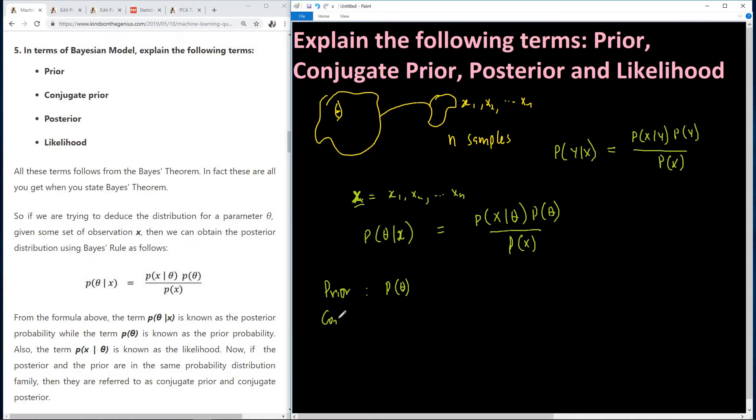Now let's say conjugate prior. Again, conjugate prior... So prior is called conjugate prior if it comes from the same distribution with the posterior. Let's now talk about posterior, then we come back to conjugate prior.